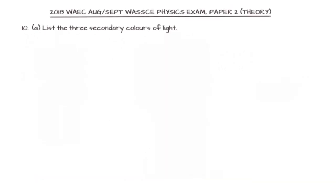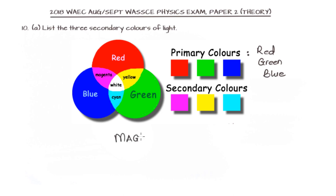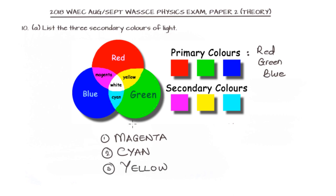We are asked to list the three secondary colors of light. The primary colors of light are red, blue, and green. The secondary colors are the mixtures of these: red + blue = magenta, red + green = yellow, blue + green = cyan. So the three secondary colors of light are magenta, yellow, and cyan.